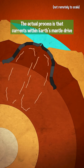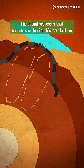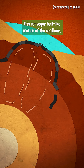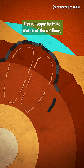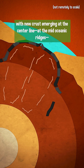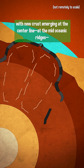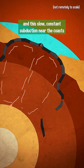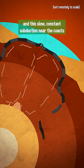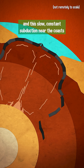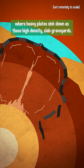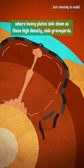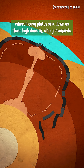The actual process is that currents within Earth's mantle drive this conveyor belt-like motion of the seafloor, with new crust emerging at the centerline at the mid-oceanic ridges and this slow constant subduction near the coasts, where heavy plates sink down as these high-density slab graveyards.